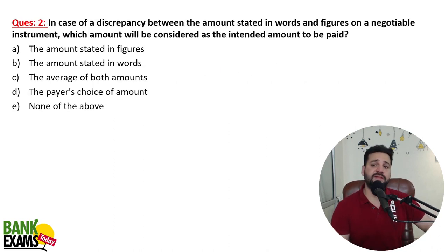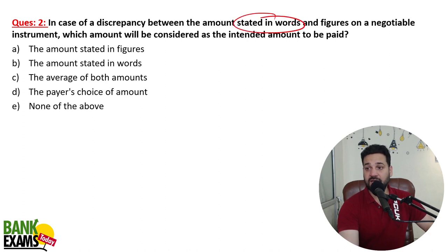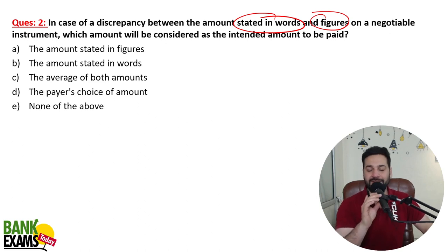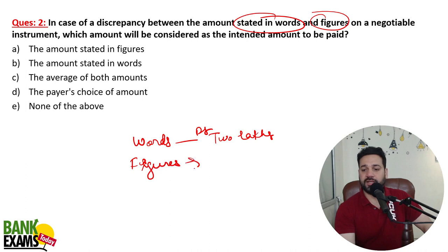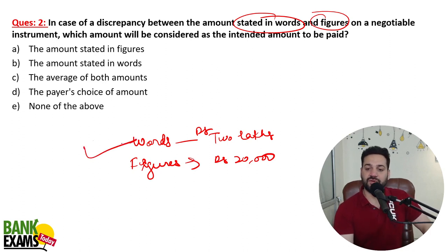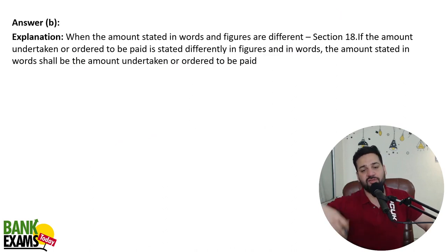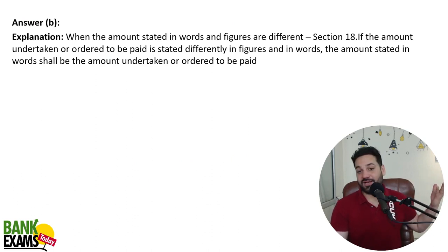In case of a discrepancy between the amount stated in words and in figures on a negotiable instrument, which amount will be considered as the intended amount to be paid? Take an example of a check: if the amount mentioned in words is 2 lakh rupees but in figures it is mentioned as 20,000 rupees — the amount mentioned in words would be considered, according to Section 18 of the Negotiable Instruments Act. This is a very important question that can be asked in the exam.